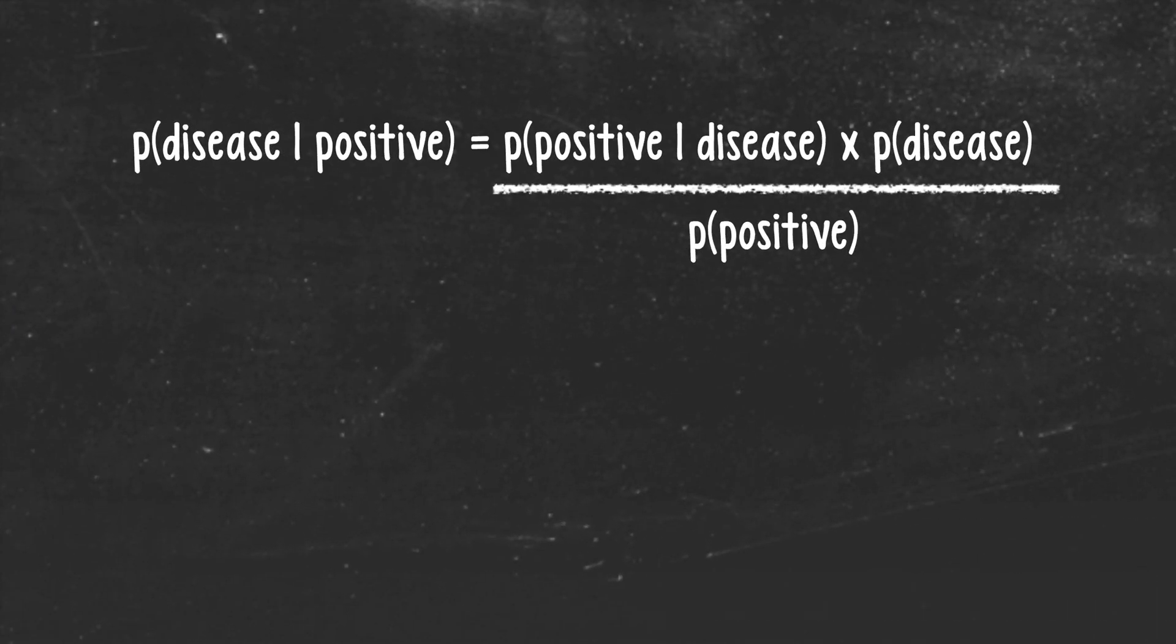And of course, the question we're interested in, the probability that a woman has ovarian cancer given that she has received a positive test result. So now that we've worked through this example using the intuitive approach, let's plug the relevant numbers into Bayes' equation and see what we get.